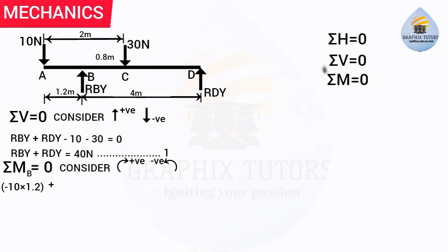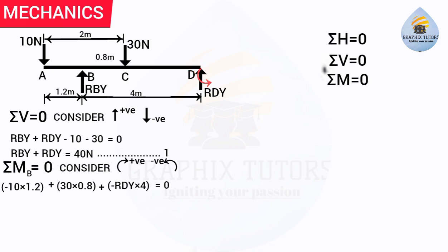Next, the 30 N force facing downward acts at point C. The distance from C to B is 0.8 m. Looking at the arrow direction, this causes a clockwise moment, so it is positive: +30 × 0.8. Then RDy is an upward force at D. The distance from D to B is 4 m. This causes an anticlockwise moment, so it is negative: −RDy × 4. Everything equals zero.